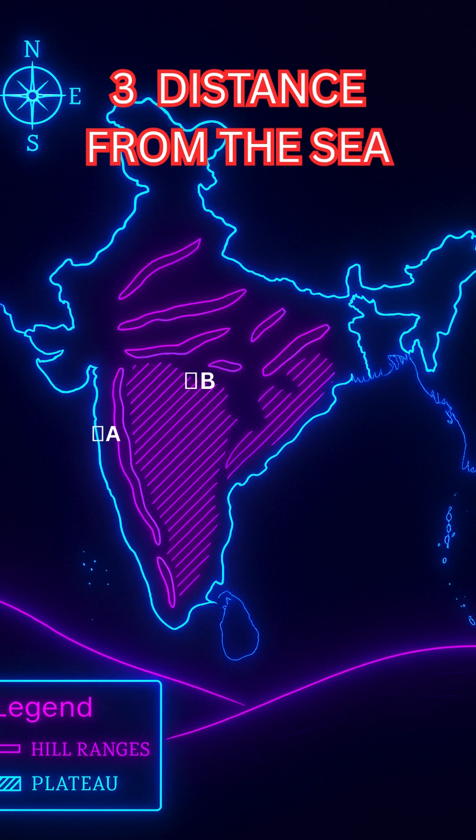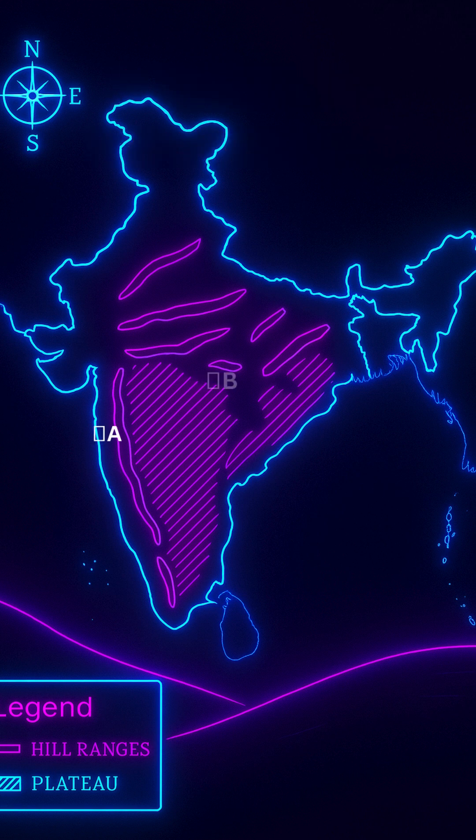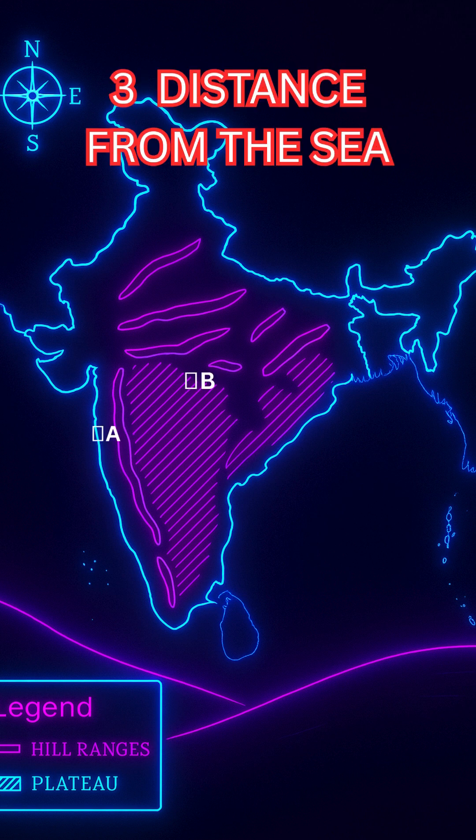Third, Distance from the Sea. The winds blowing from land to sea and vice versa help to moderate the temperature experienced along coastal areas. Away from the sea, the maritime influence gradually decreases to cause very high day temperature and low night temperature.